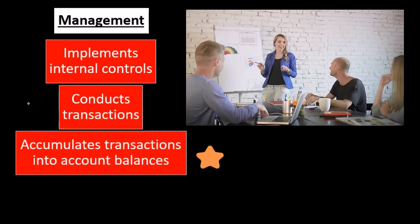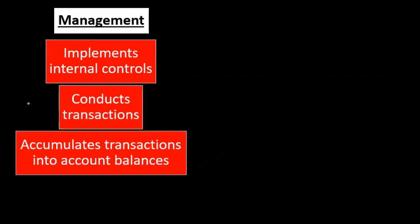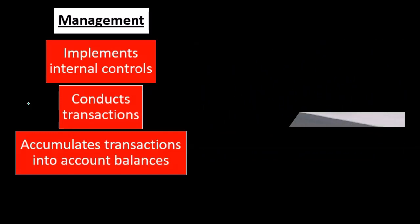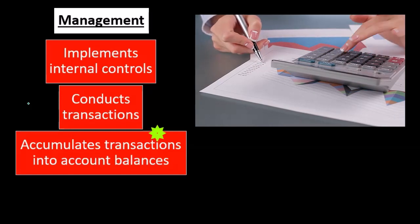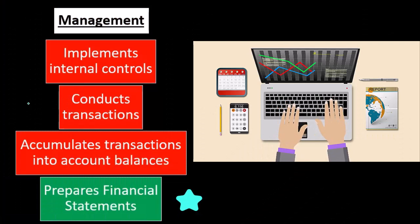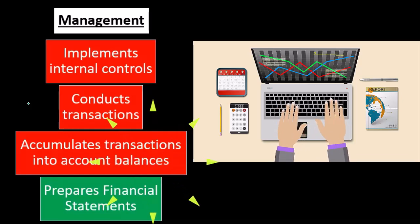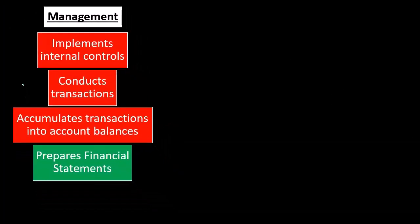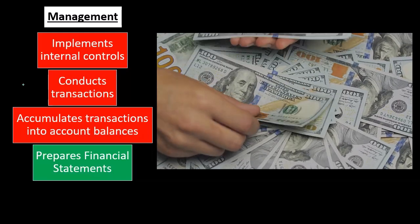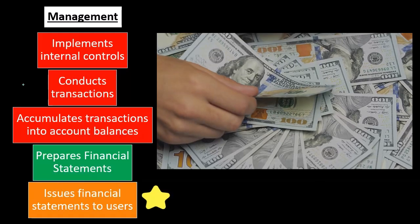Management conducts the actual financial transactions throughout the year, then records and compiles the information — debits and credits accumulated into account balances. This is general ledger accounting: transactions compiled into a trial balance, then used to prepare financial statements — the balance sheet, income statement, and statement of cash flows.